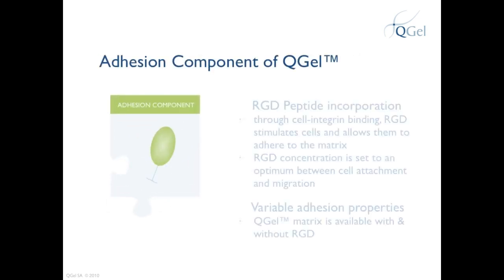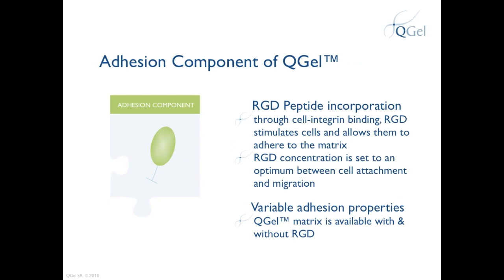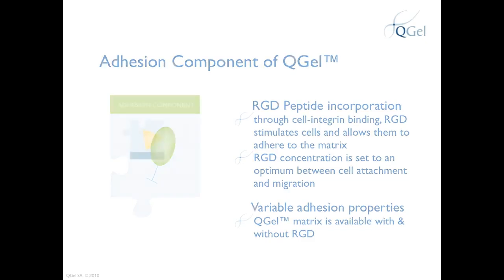The adhesion component of Q-Gel is an RGD peptide covalently bonded to the Q-Gel matrix. The presence of RGD allows cells to adhere and proliferate through the matrix. Importantly, the concentration of RGD has been fixed for optimum cell attachment and migration in Q-Gel MT3D matrix, which is available with and without RGD.